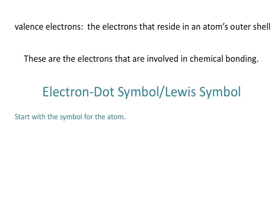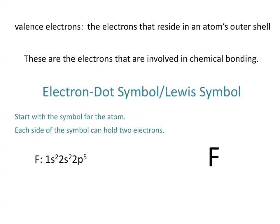In order to draw an electron dot symbol, or Lewis symbol, you need to start with the symbol for the atom. Let's draw the electron dot symbol for fluorine. Each side of the symbol can hold two electrons, and each side is equivalent, so it doesn't matter where you start placing your electrons. When we draw an electron dot symbol, we draw the valence electrons as dots around the symbol of the atom.